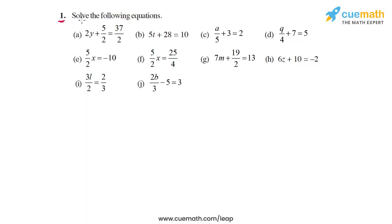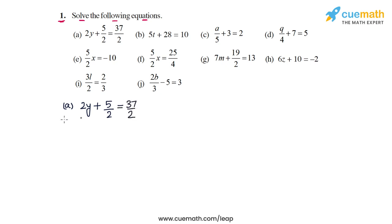In question one we have to solve each of the following given equations. Let's start with part a. The equation is 2y plus 5 by 2 is equal to 37 by 2. Our first step should be to get rid of this 5 by 2, and we can do that by subtracting 5 by 2 from both sides.